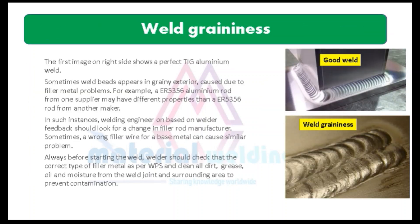Number 2 is weld graininess. The first image on the right side shows a perfect TIG aluminum weld. Sometimes weld beads appear with a grainy exterior caused by filler metal problems. For example, an ER5356 aluminum rod from one supplier may have different properties than an ER5356 rod from another maker. In such instances, welding engineers, based on welder feedback, should look for a change in filler rod manufacturer.